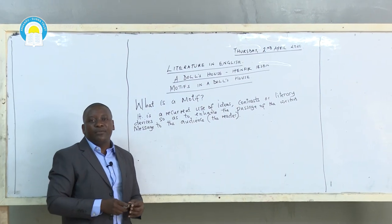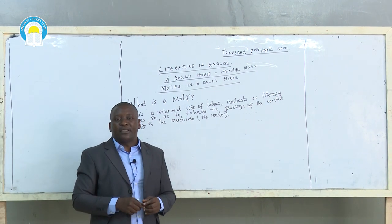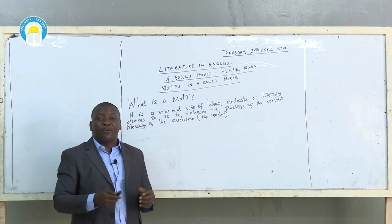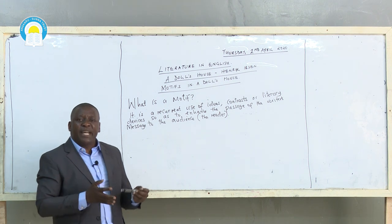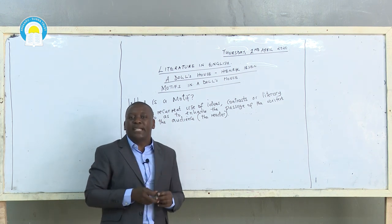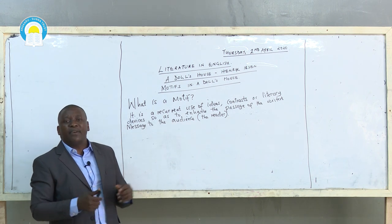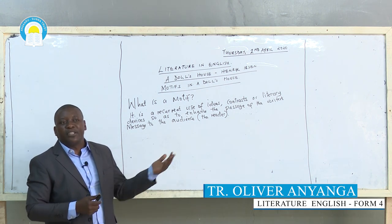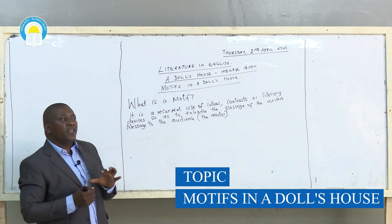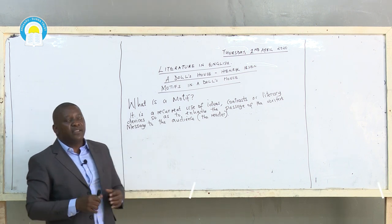What themes have you covered so far? We have a number of important themes, like the sacrificial role of women, the theme of conflict, and the theme of marriage — specifically, marriage as an equal partnership in this text by Henrik Ibsen. In relation to those themes, what are some of the recurring structures in this text?